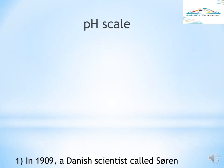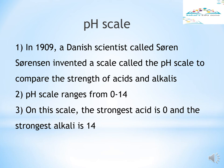pH scale. To compare the strength of acid and alkali, we can use the pH scale. This pH scale was invented by Soren Sorenson, a Danish scientist, in 1909. The letters P and H stand for power of hydrogen, because hydrogen is an element found in acids which takes an active part in their chemical reactions. The pH scale runs from 0 to 14. On this scale, the strongest acid is 0 and the strongest alkali is 14.